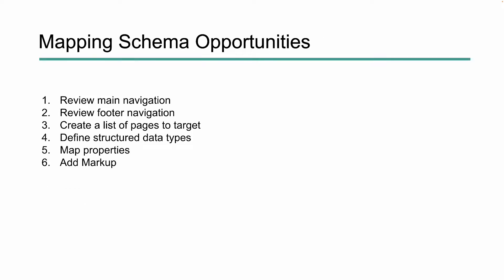So how do we actually go about doing this? When we look at adding structured data to our site, it can be very overwhelming because there are so many different options. In order to set our sites up for the most success possible, we need to follow a plan of action. I'm going to walk you through our process of mapping the different types of schema opportunities and how we can lay that strong foundation. We start by looking at our navigation — both the main navigation and the footer — create a list of high-priority pages, define the structured data types, map the properties, build out our markup, and add it into the site.